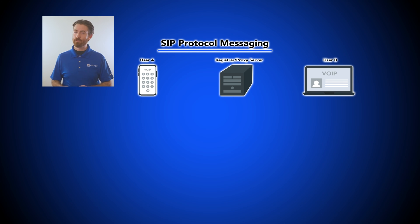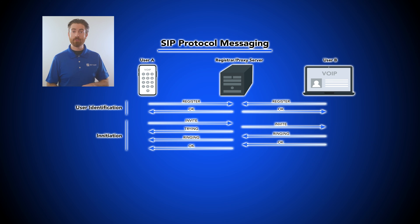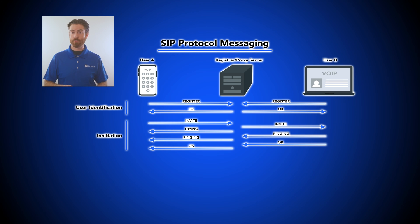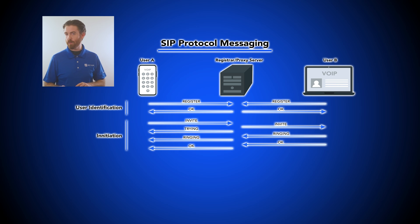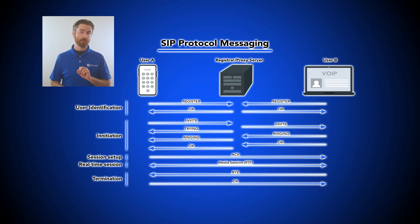These messages contain information and data that establishes the call. When a user initiates a SIP application, their device sends a request to the SIP server, which forwards the request to the recipient's SIP server, which then forwards the message to the recipient's device. Whenever a request reaches the server, the software sends a receipt back to the sender. This back-and-forth communication occurs in nanoseconds between all parties involved in the call.